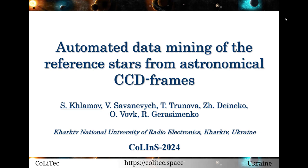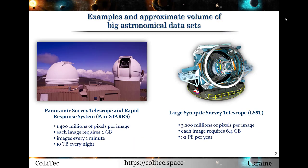Technological progress in the production of cameras and telescopes demonstrates continuous acceleration, reflecting modern trends in scientific and engineering developments. Today's digital cameras possess impressive characteristics including resolutions exceeding 100 megapixels, significantly surpassing those of previous models. Telescopes are also keeping pace. For example, Pan-STARRS in Hawaii contains two telescopes with a 1.8-meter aperture, both equipped with the largest CCD camera, which records about 1.4 billion pixels per image.